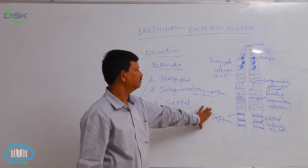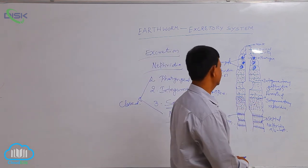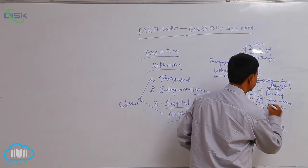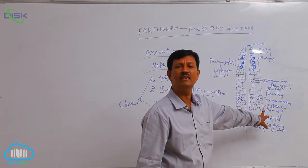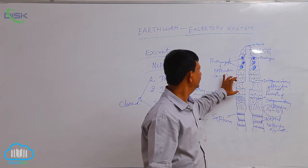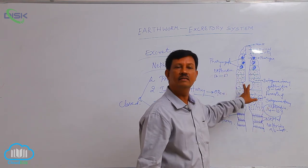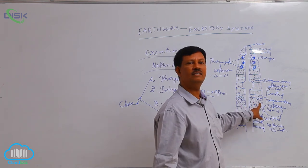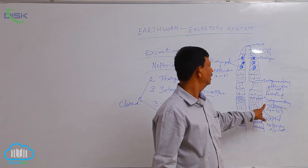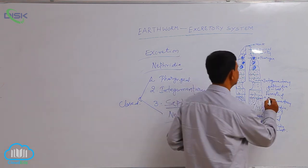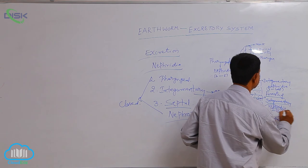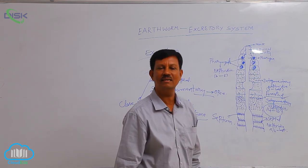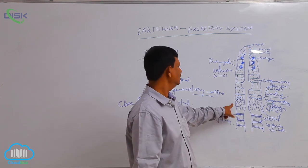These are the three types of nephridia present. In the clitellum region, especially in the 14th to 16th segments, integumentary nephridia are large in number. Usually in each segment, 80 to 100 nephridia are present, but in the clitellum region there are very large numbers, hence they are known as the 'forests of integumentary nephridia,' present in the 14th, 15th, and 16th segments.